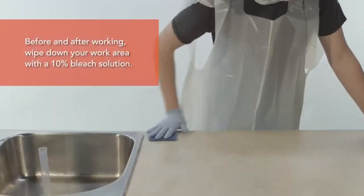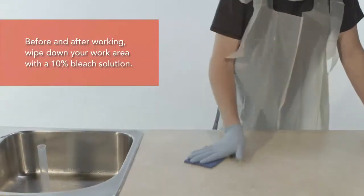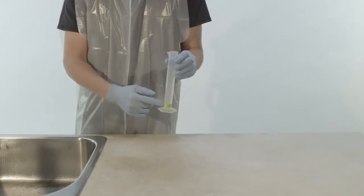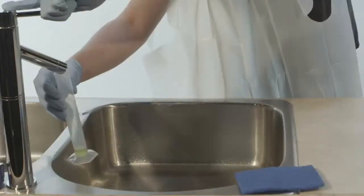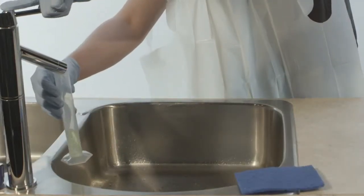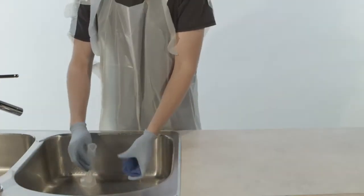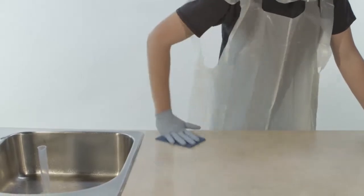Before and after working, it is important that you wipe down your work area with a 10% bleach solution. An easy way to measure out this concentration of bleach is to add 10 milliliters of bleach to a 100 milliliter graduated cylinder, and then fill the cylinder to the 100 mark. This can then be applied to a sponge or scrubber and used on the work area.